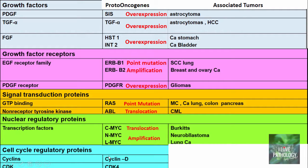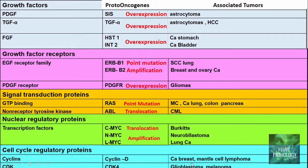The last category is cell cycle regulatory proteins — the cyclins and cyclin-dependent kinases. The proto-oncogenes are Cyclin D and CDK4. Translocation of the Cyclin D gene is associated with carcinoma of the breast and mantle cell lymphomas, while amplification of CDK4 results in glioblastoma and melanoma. In summary, these five categories cover the proto-oncogenes, their modes of activation to oncogenes, and the tumors associated with those oncogenes and oncoproteins.